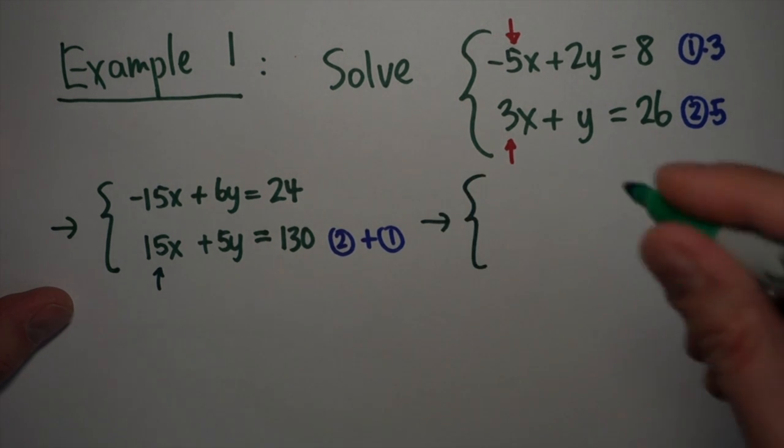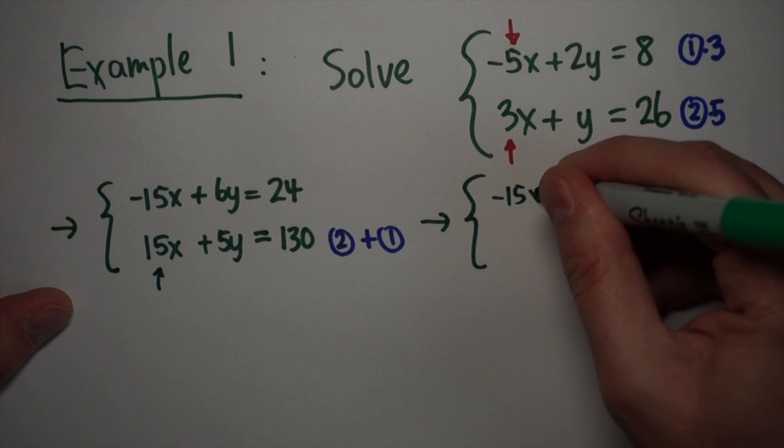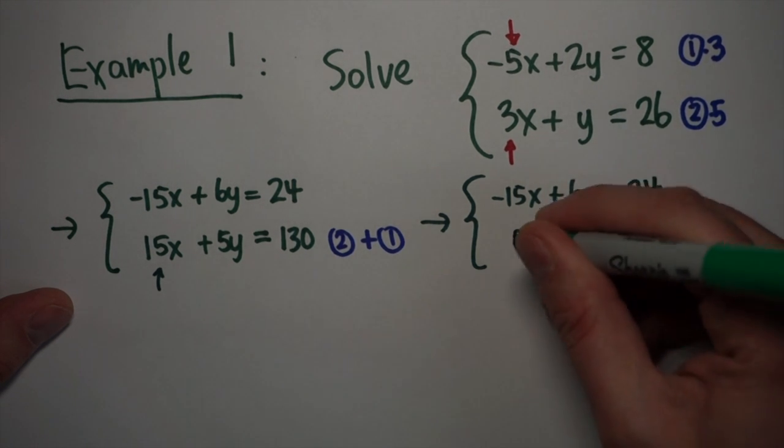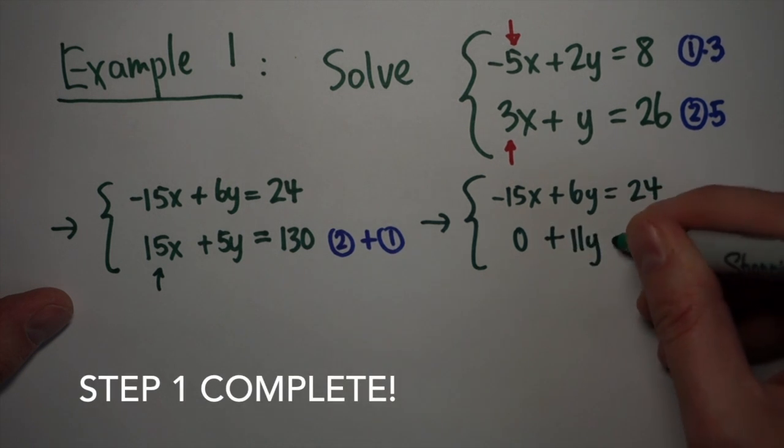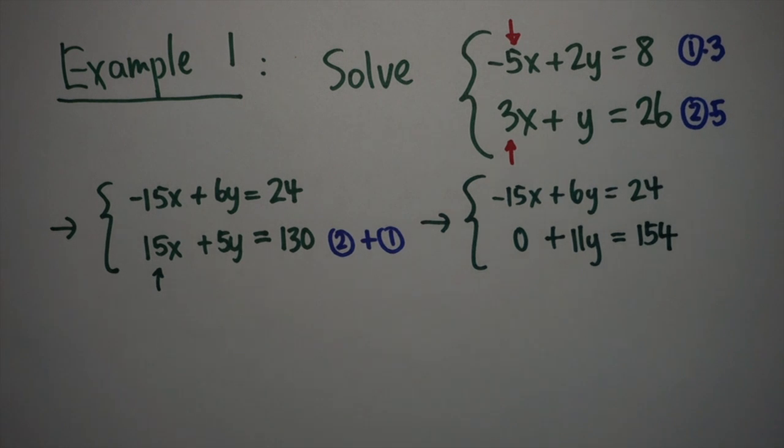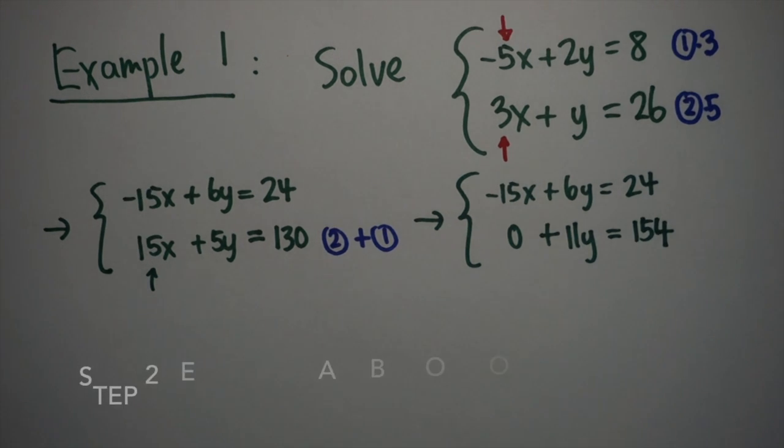So when I do that, what I end up with, the first equation doesn't change, negative 15x plus 6y is equal to 24. My second equation, when I add the two together, gives me 0, and then 6y plus 5y is 11y, and then 24 plus 130 is 154.